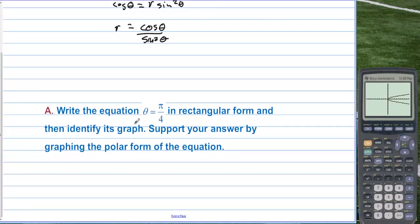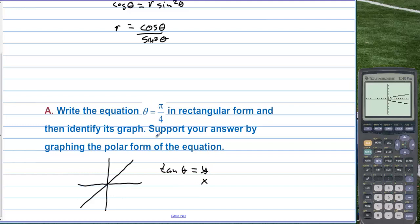Write the equation θ = π/4 in rectangular form and identify its graph. When we graph this polar equation, we get a line at angle π/4. Taking the tangent of both sides: tanθ = tan(π/4). Since tanθ = y/x and tan(π/4) = 1, we get y/x = 1. Multiplying by x gives y = x, which is the same line as θ = π/4.